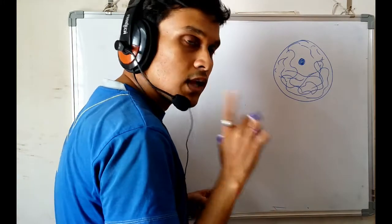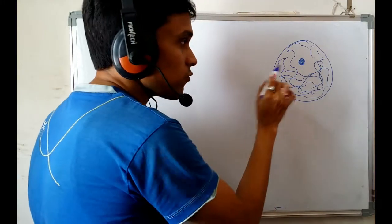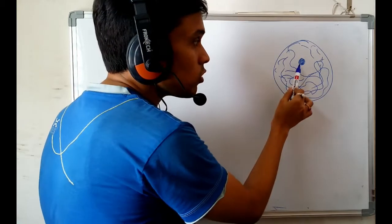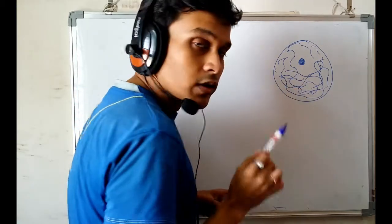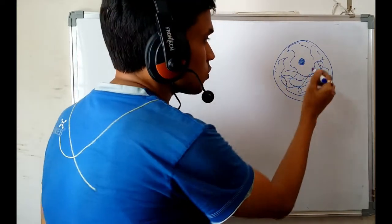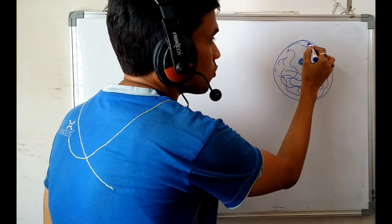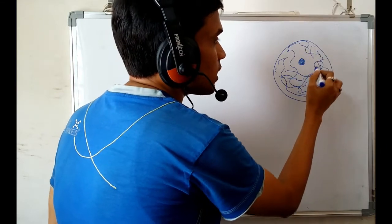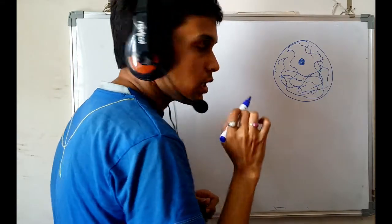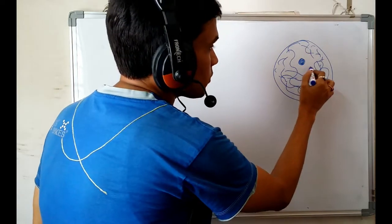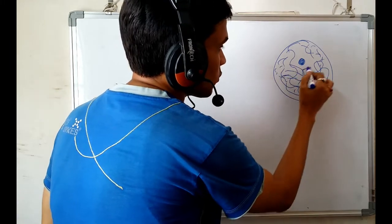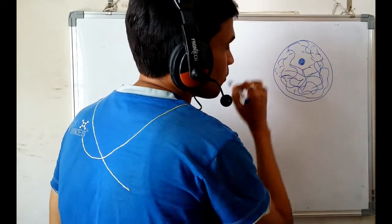There is one nucleolus inside the nucleus, but you have to understand that the nucleolus does not contain any DNA part or chromosomal part. So the chromosomes are present in the nucleoplasm of the nucleus.